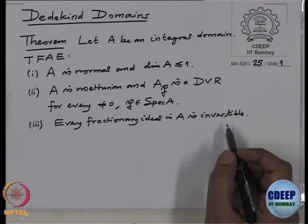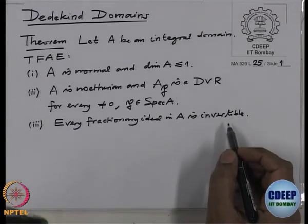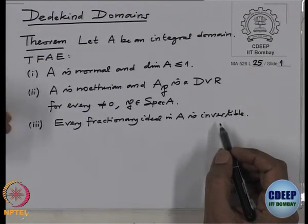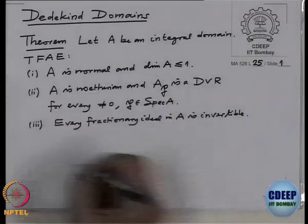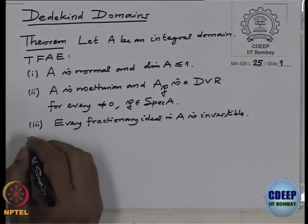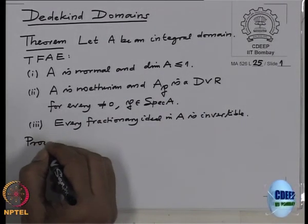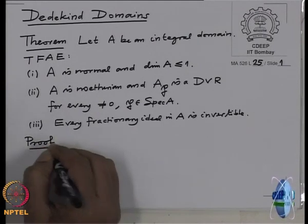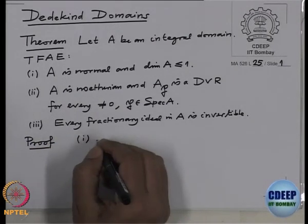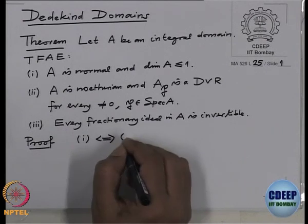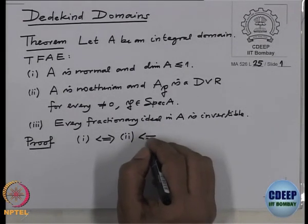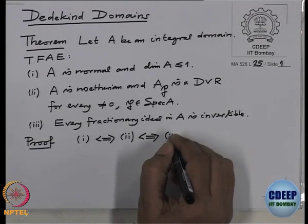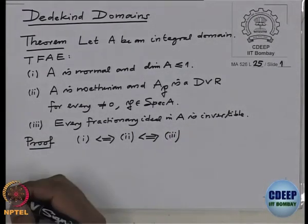And invertible means those fractionary ideals form a monoid and the element is invertible. So let us first finish off the proof of this equivalence. I am going to prove one if and only if two, and two if and only if three.